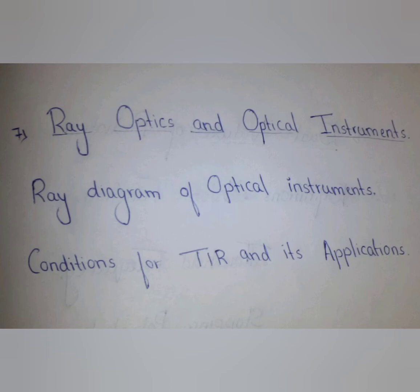From seventh chapter, Ray Optics and Optical Instruments. Most important topics are: ray diagram of optical instruments, and conditions for total internal reflection and its applications.